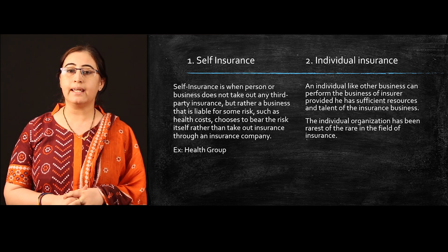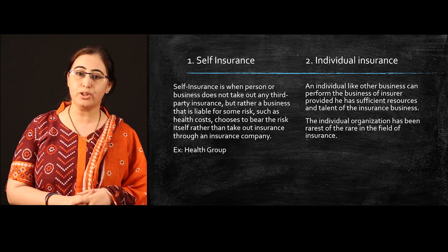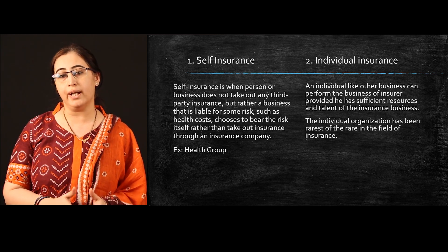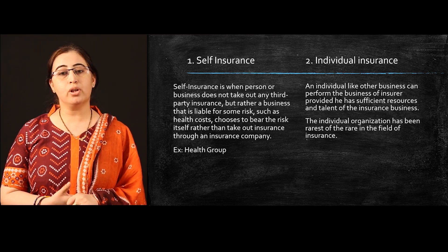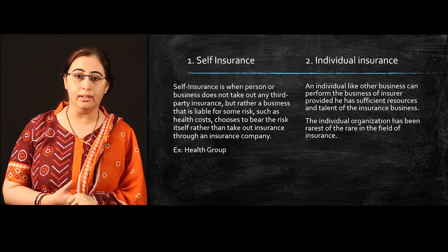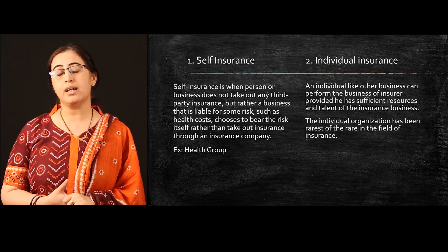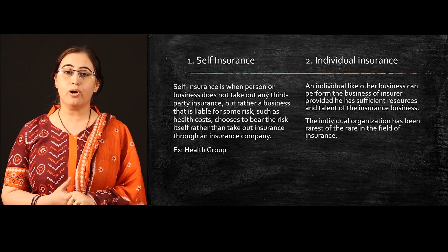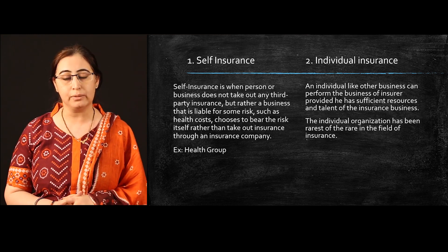The second type of insurance is individual insurance. An individual, like any other business, can start the business of insurance and work as an insurance provider. But the business of insurance is a very vast business which includes risk at a huge level, so it is very difficult for an individual to start a business of insurance. The individual organization has been the rarest in this type of business.